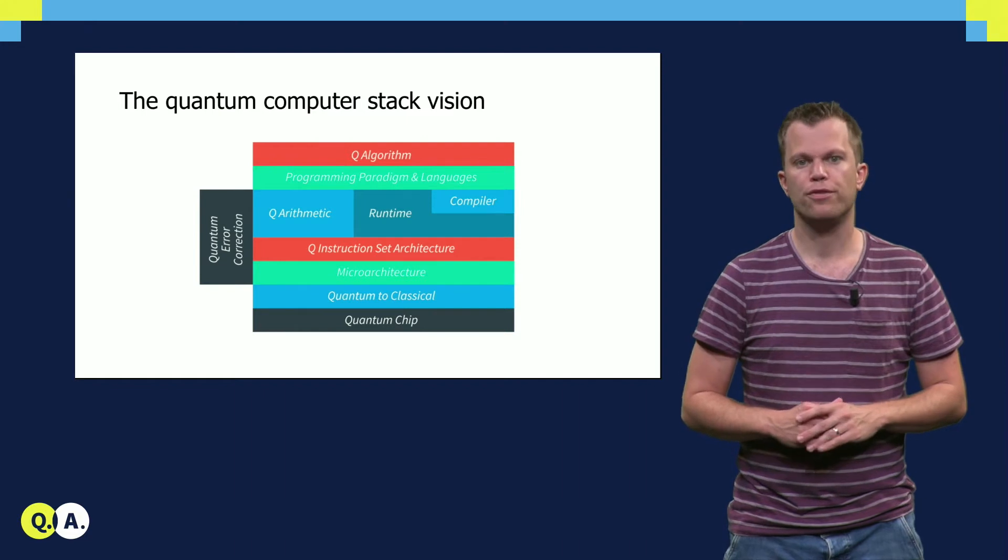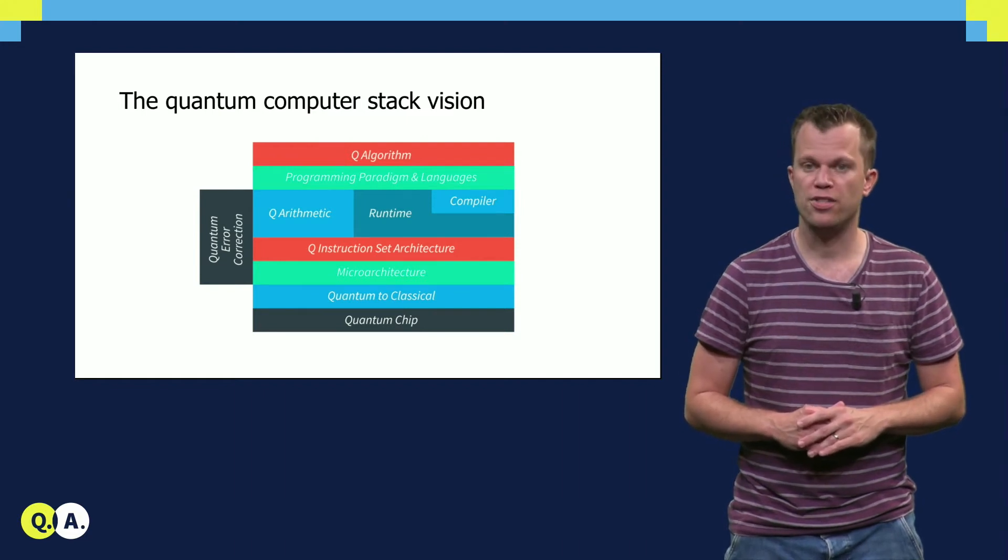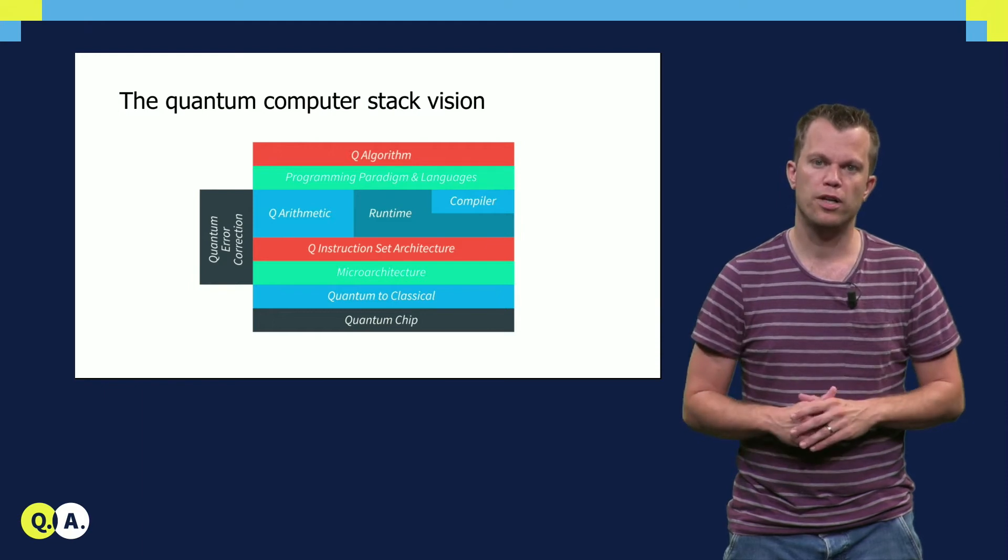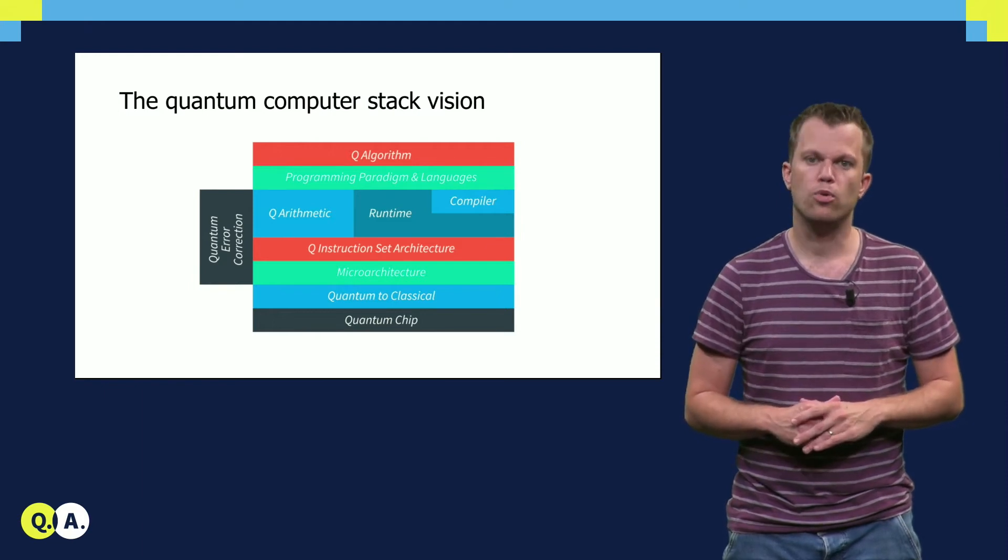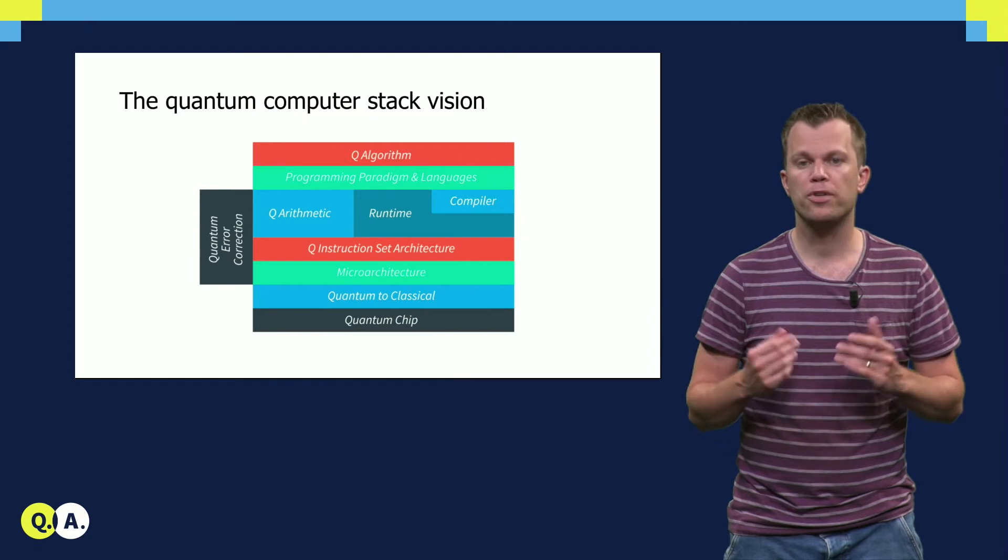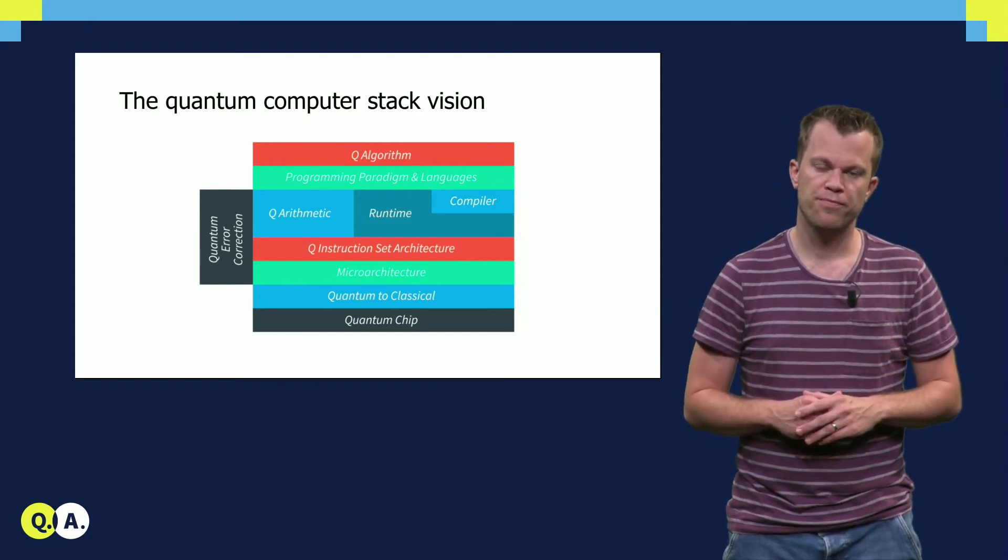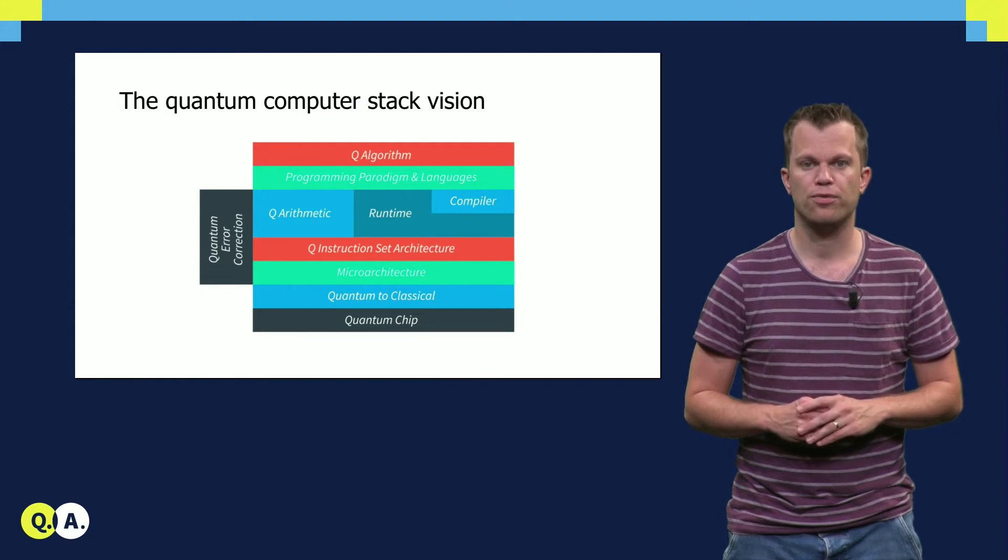In part 2 of this MOOC we will focus on the higher layers of this stack. In addition, we will also discuss the path toward a quantum internet. A quantum internet allows for communication between nodes, where the security of the communication is dictated by the laws of quantum mechanics.